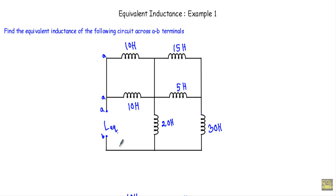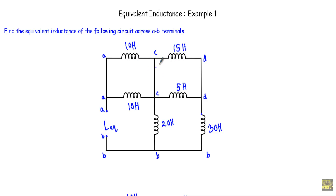This is our point B, and this will also be point B. Let's say this is our point C, this is point D. Our points will continue as long as we get a short circuit or short path. We cannot go in the direction where we encounter an inductor.